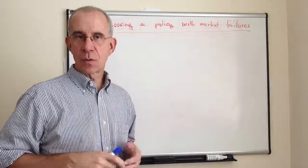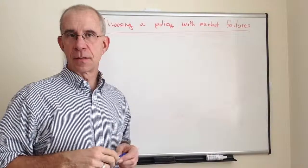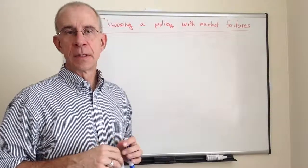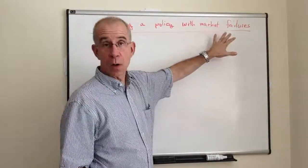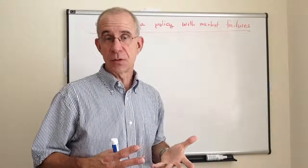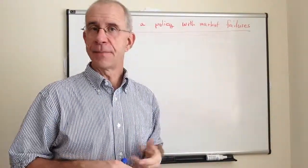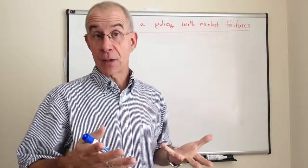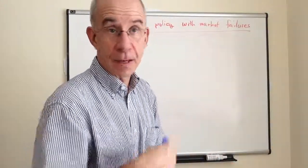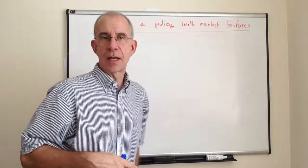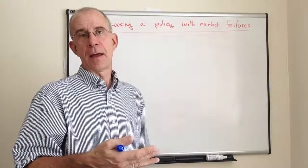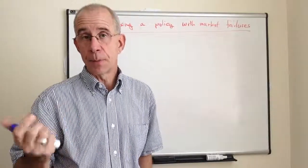Of course the idealized world of economic theory doesn't often pertain in the real world. There are many instances where people will argue that there are various types of market failures in industry or some sort of activity. That could be, for example, externalities — a positive externality where people don't take into account benefits that accrue to society, or a cost that people don't think about, such as pollution.